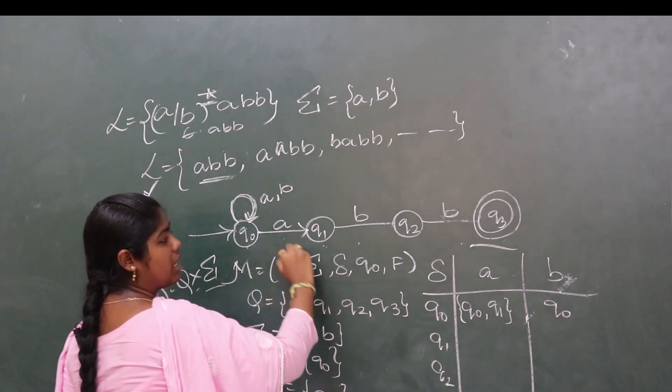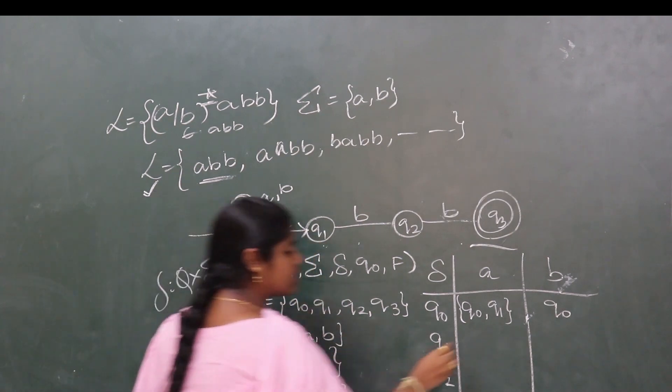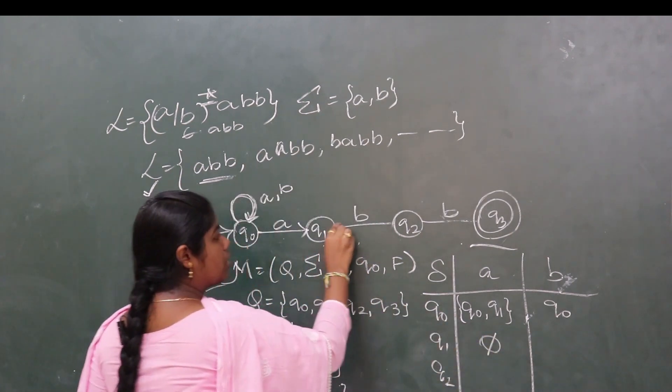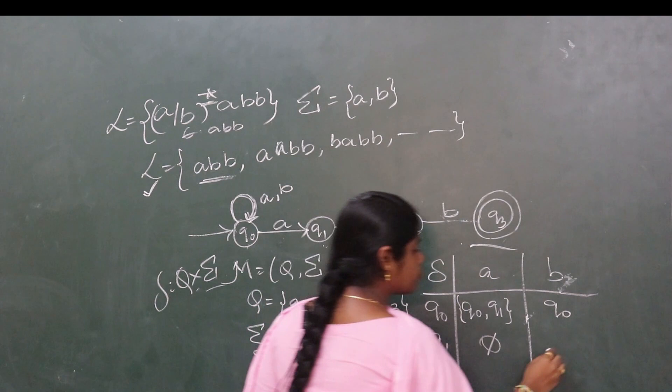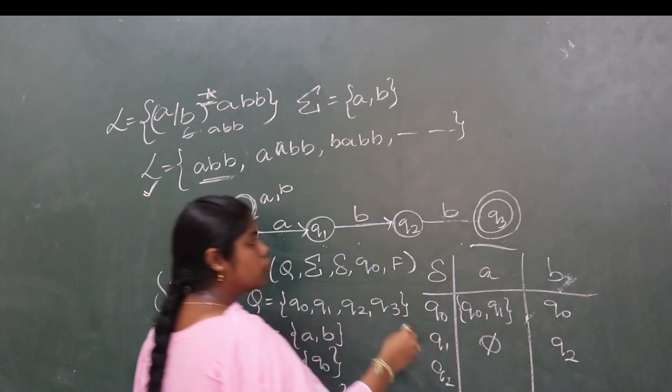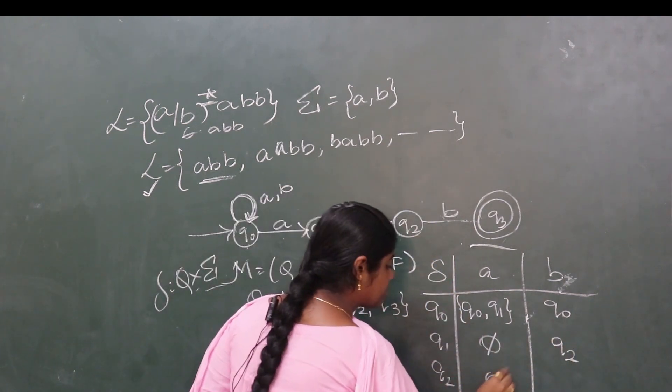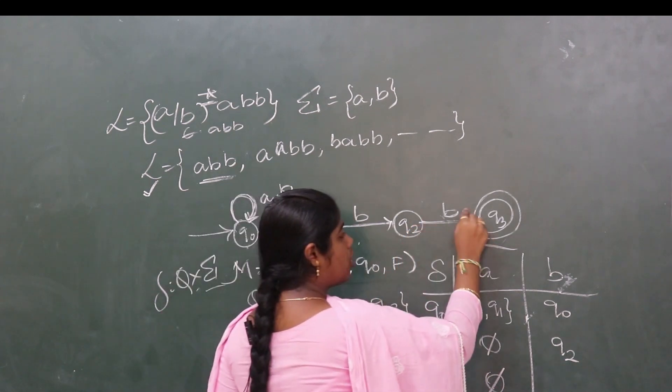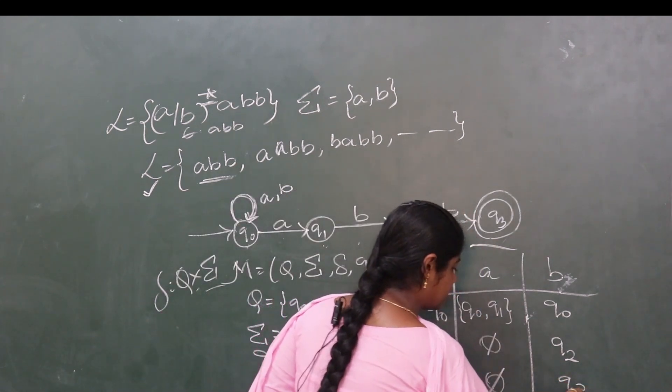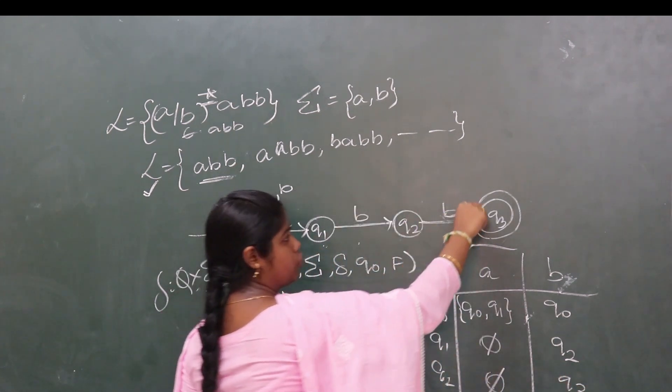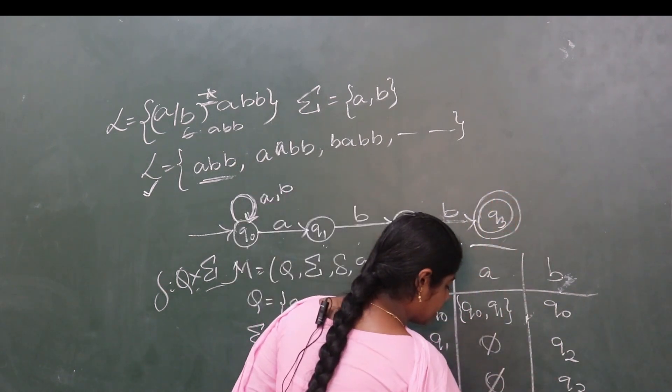Q1 on a has no transition, so it is the null set. Q1 on b goes to Q2. Q2 on a is null set. Q2 on b goes to Q3. Q3 on a and Q3 on b have no transitions, so both are null sets.